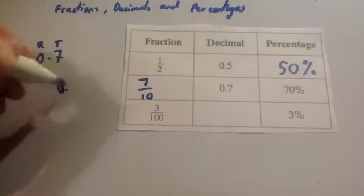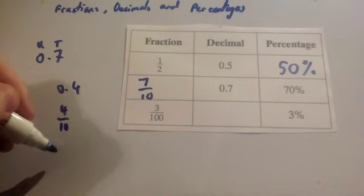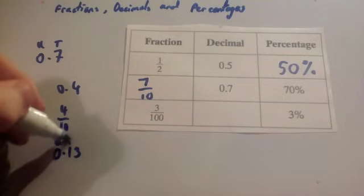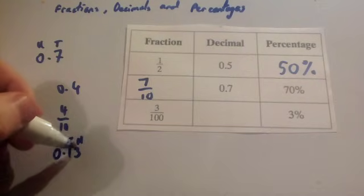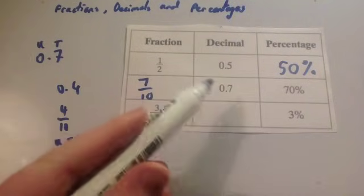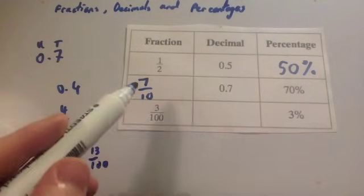So for instance, if you had 0.4, it would be 4 over 10, or 4 tenths. You can cancel that down, actually. If you had 0.13, that would be their units, tenths, hundredths - that's 13 hundredths. So that would be 13 over 100. But because of this one, you've got 0.7, that's 7 tenths, so it's 7 over 10.